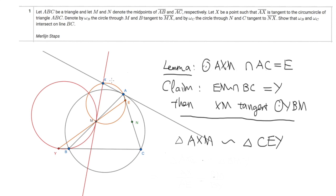More precisely, XM is tangent to the circle YBM. The proof of this lemma is quite simple. These two triangles are similar: triangle AXM and triangle CEY. Since line XA is tangent to the circumcircle, the angle XAM equals angle ACB, which is angle ECY. Moreover, by construction X, A, N, E are on the same circle, so angle YEC equals angle AXM. This means these two triangles are similar.